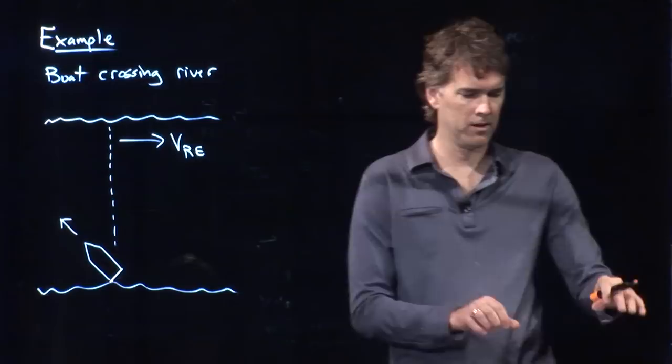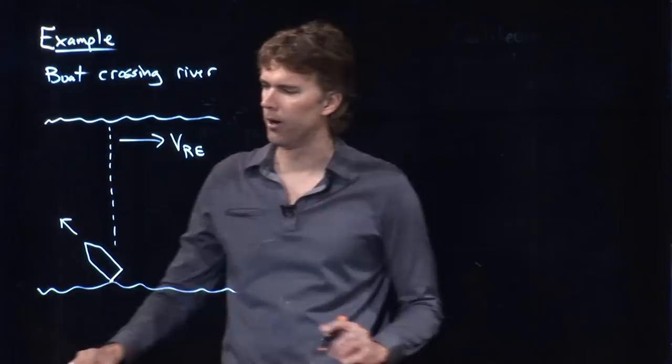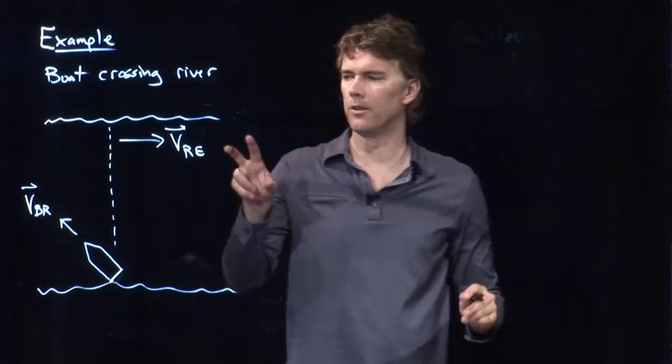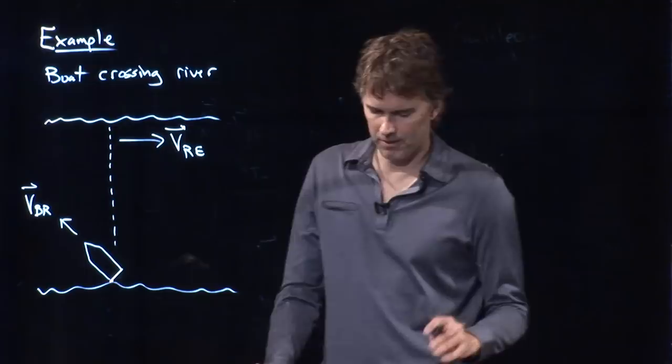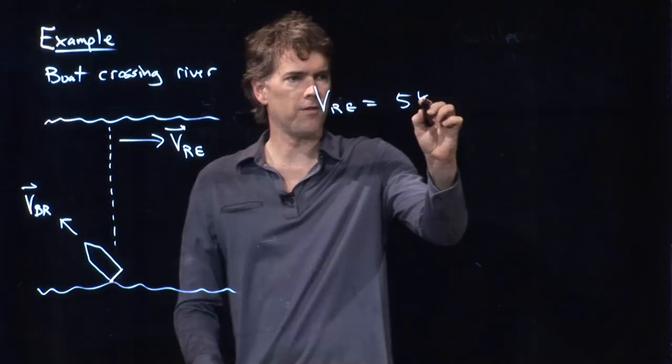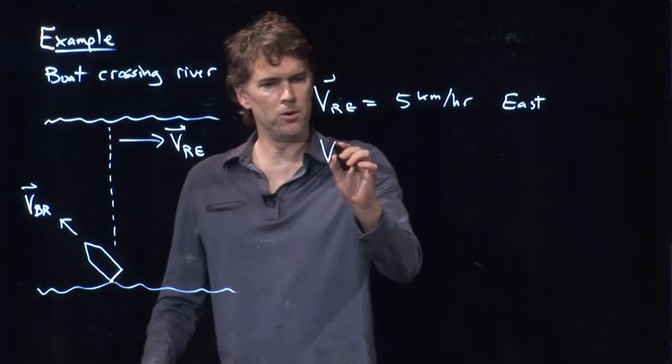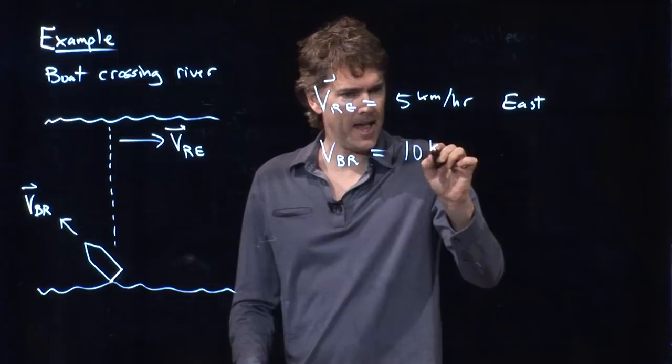And we need to figure out what direction I need to point the boat and how fast do I have to move the boat in order to get straight across the river. Okay, so here's our two relative velocities. We have the velocity of the river relative to the earth and the velocity of the boat relative to the river. And let's give you some numbers. Let's say that the speed of the river relative to the earth is five kilometers per hour and it is heading east. And the velocity of the boat relative to the river, the maximum speed that it can do is 10 kilometers per hour. And we don't know what the angle is yet.